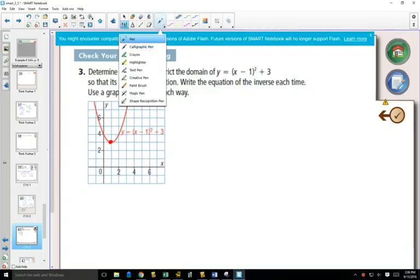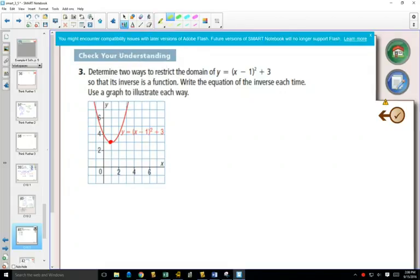Because if I take out my highlighter and I only think about this side. And in this question, it says determine two ways. So we're going to figure out one way where we look at one side, and another way we look at another side.